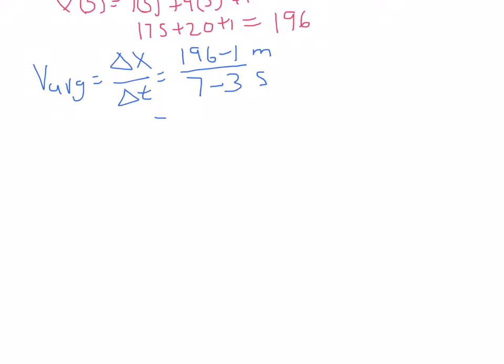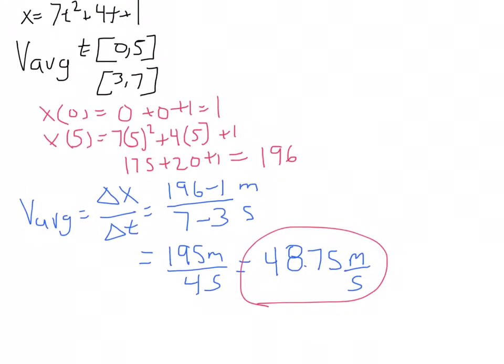This gives us 195 divided by 4. 4 goes into 19, 4 times gives us 3 remaining 8. 48.75 meters per second, and that is for the interval from 0 to 5.